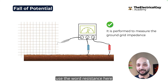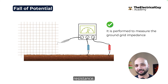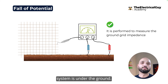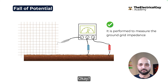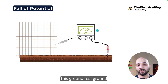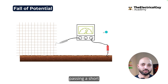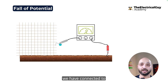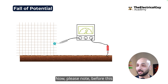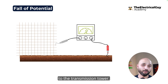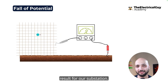We can also use the word resistance here, because what we are checking is the copper wire's resistance. We take a ground impedance test meter capable of passing short current waves. One electrode is connected to the earth grid. Before this test is performed, it is important that you disconnect the earth grid from any other grounding system — for example, if the substation grid is also connected to transmission towers, you should disconnect that to get accurate results for your substation.